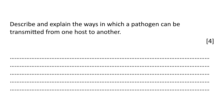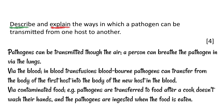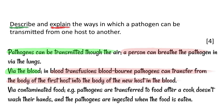Now, an exam question: 'Describe and explain the ways in which a pathogen can be transmitted from one host to another.' That's a four-mark question. There are two command terms — describe and explain — so there are two requirements in the answer. First: pathogens can be transmitted through the air (description); a person can breathe the pathogen in via the lungs (explanation). Next: it could be transmitted via the blood (description).